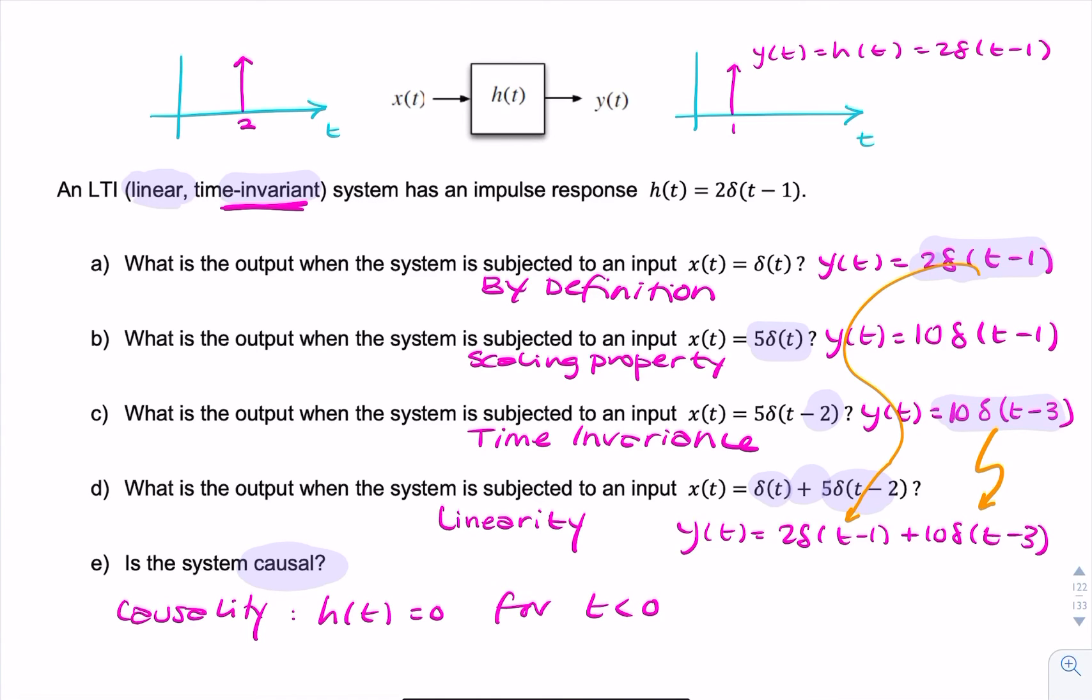Remember we said, a causal system will never anticipate the input. In other words, it will never respond to something in negative time. So if there's an impulse at t equals zero, you won't expect to have an output before t equals zero. Let's look at the impulse response here. The impulse response given is an impulse at t equals one.